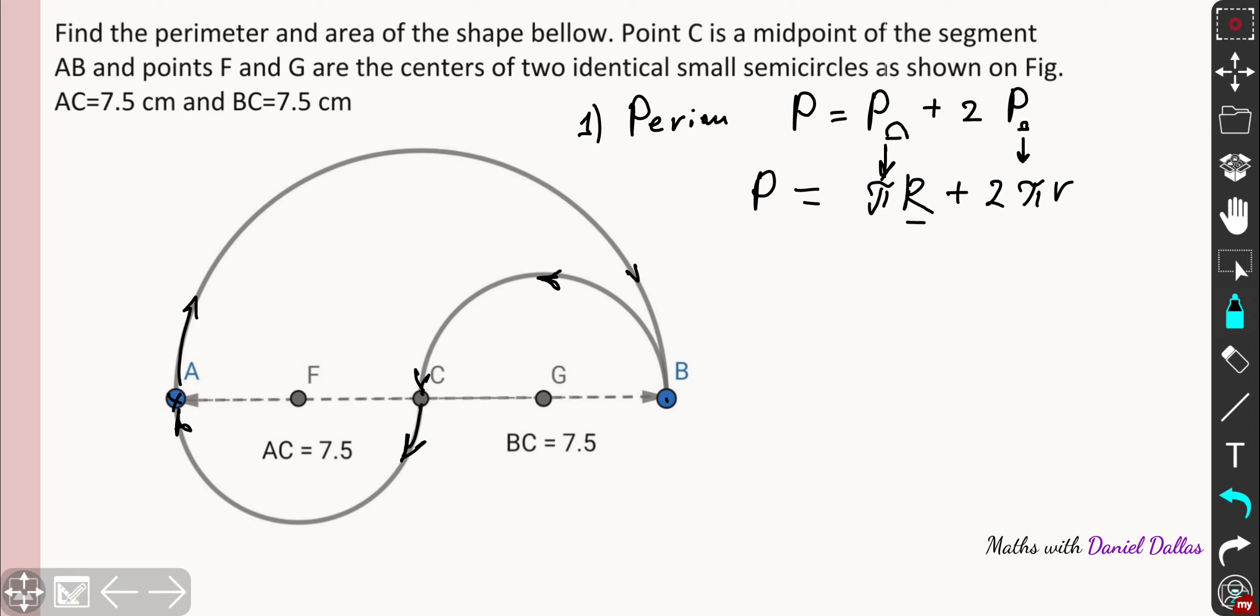So the final goal is to find the big radius and a small one. So the big radius is simply AC, is 7.5, so you can plug numbers. So the big radius is 7.5 centimeters, while the small one, let's have a look, the small one is half of that. So you've taken 7.5 and divide by 2, that's your small radius.